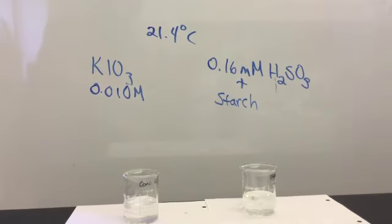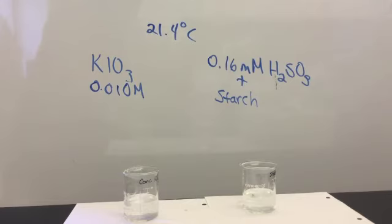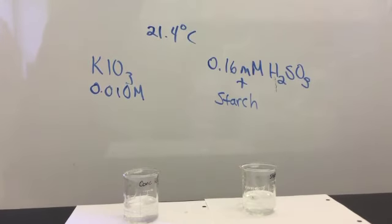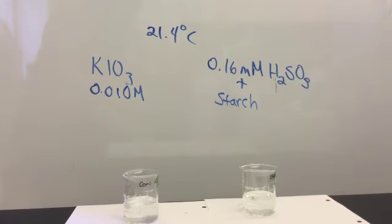Now we'll look at a reaction with a more concentrated version of the potassium iodate. In this case, the concentration of the potassium iodate is 0.010 molar, or not quite double our original concentration. Again, still working at room temperature.